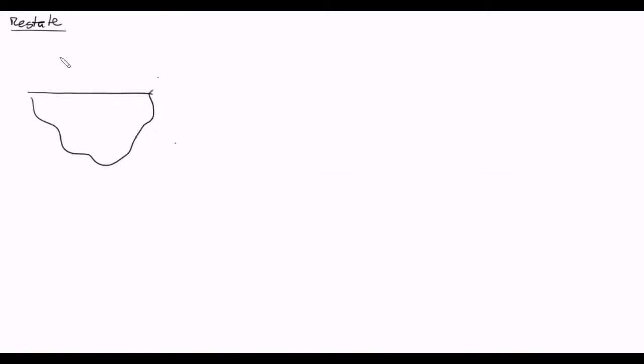All right, everybody, let's do practice problem number two for homework number ten. So as usual, we start by restating the problem. We have a solid surface, and there is some irradiation, which we will call G, that's hitting our surface. Our surface is also emitting, and we'll write that as E, the emissive power. So we have a surface with irradiation hitting it, and it's emitting radiation.